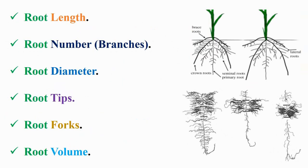WinRizzo makes analysis by tracing roots using colors to analyze root length, root numbers or branches, root diameter, root tips, root forks, and root volume, as mentioned in the figures inside the slide and next slide.